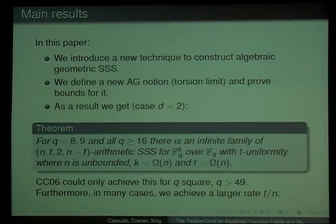We get that there exists infinite families of asymptotically good arithmetic secret sharing schemes for fields such as F_8, F_9, and all fields with more than 16 elements. We can compare this with results in CC06 here and they could only achieve this for Q squared bigger than 49. And actually, even when they achieve this, with these new techniques, we can improve the rates of d divided by n. We can also improve our results in 2009. Actually, algebraic geometry seems to be the only way so far that we can achieve such results. In particular, probabilistic methods don't seem to work, as opposed to what happens in code theory where algebraic geometry only gives some improvement on results that are also achievable by probabilistic methods.